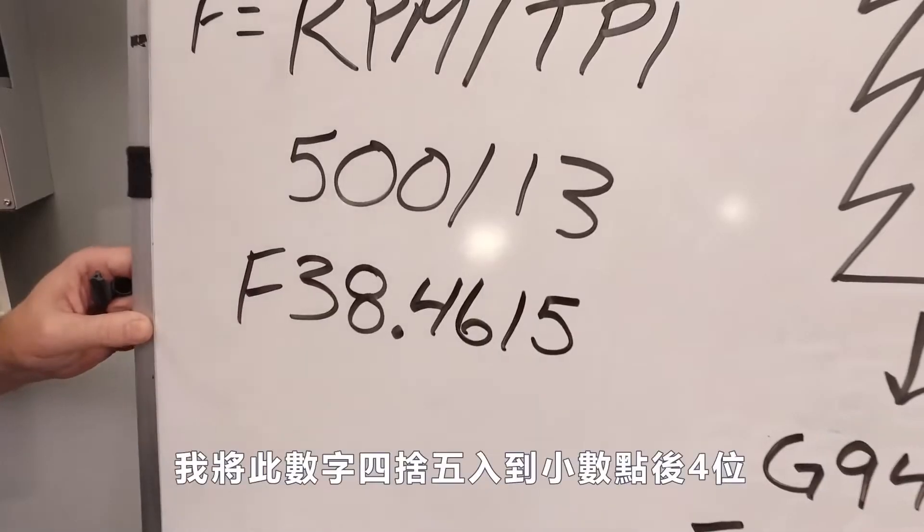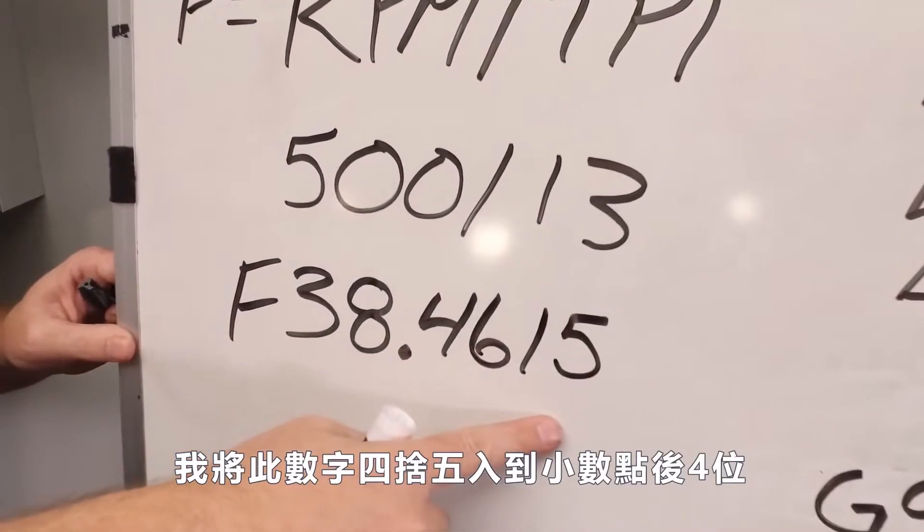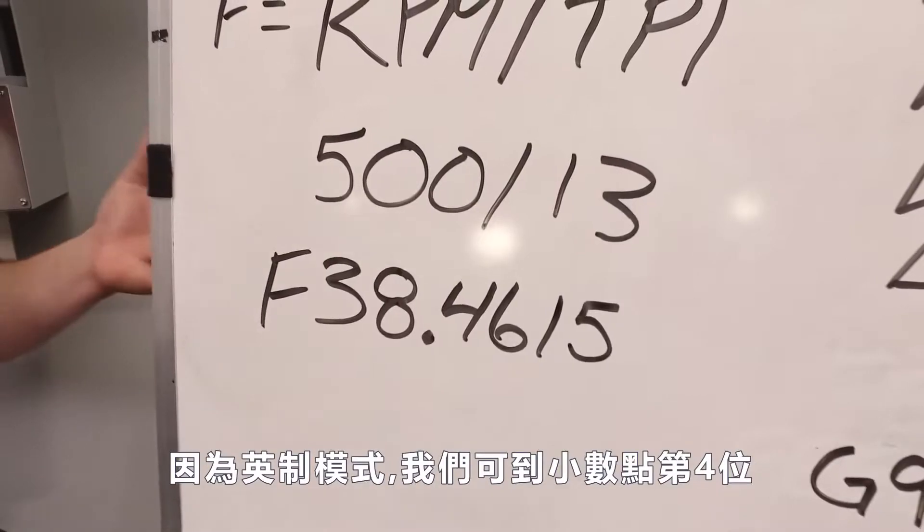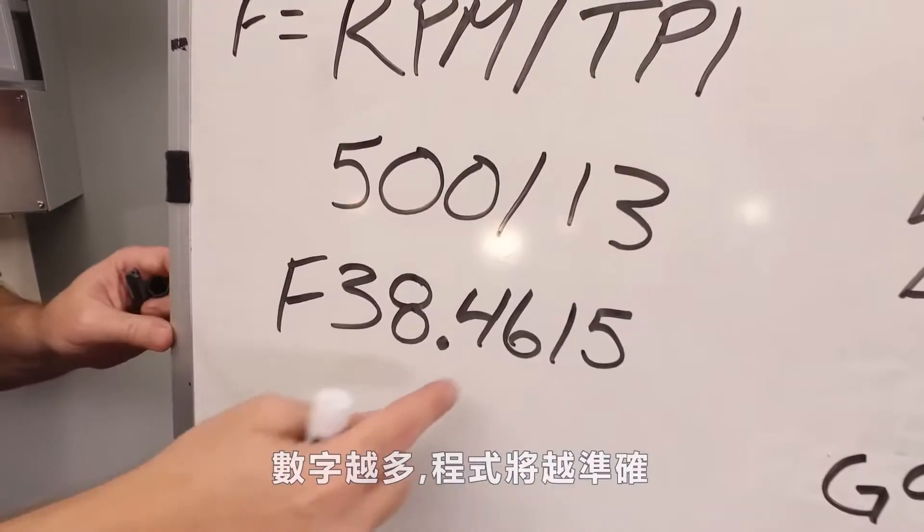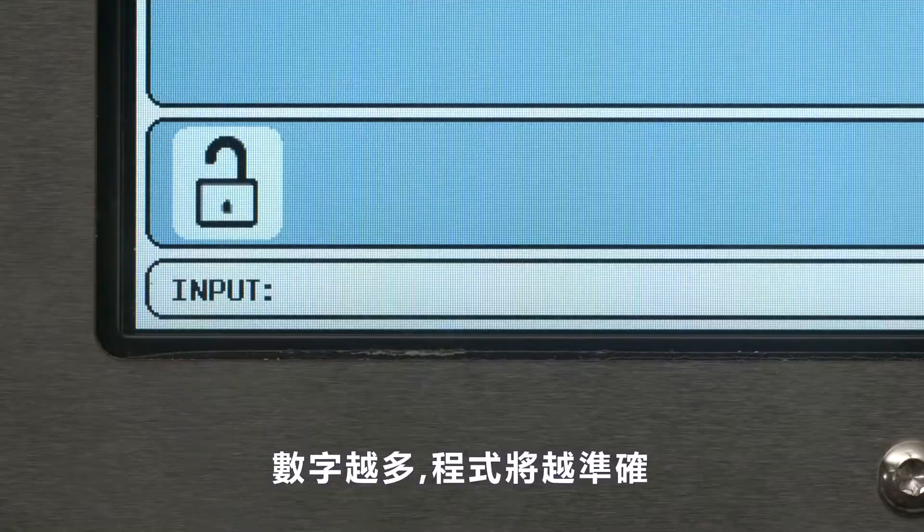Now this part's important. I rounded this number out to four decimal places because in inch mode, we can go up to four decimal places. The further we carry this number, the more accurate our threads will be.